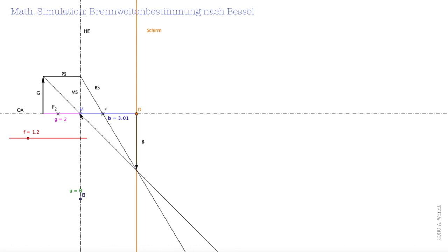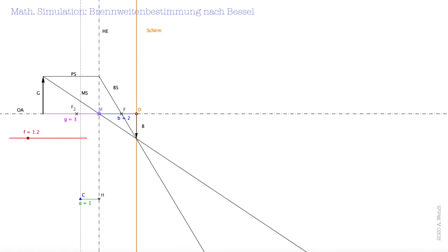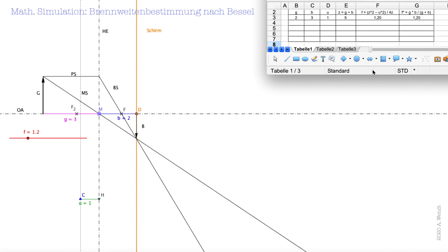Ich verschiebe die Linse jetzt so, dass ich das zweite scharfe Bild bekomme. Das Programm misst automatisch G (Gegenstandsweite) und B (Bildweite) für die zweite Position sowie die Verschiebung U der Linse. Diese Werte trage ich in ein Kalkulationsprogramm ein: G=3, B=2, U=1. Z ist G plus B, also 5. F wird nach Bessel berechnet: F = (Z²−U²)/(4Z), das gibt 1,2. Auch nach der Linsengleichung ergibt sich 1,2.